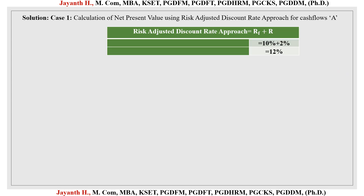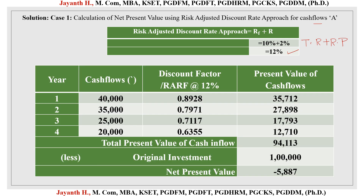To solve, we identify the net present value using the risk adjusted discount rate approach. For investment A, the discount rate is the target return of 10% plus risk premium of 2%, giving 12%. This 12% is the discount factor used for solving the problem.